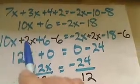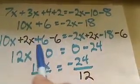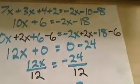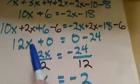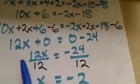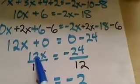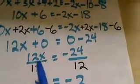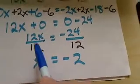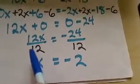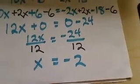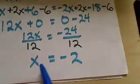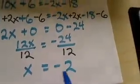Once we have added and subtracted everything we can, we've created zeros, which go away. Now we look for numerical coefficients that we can multiply or divide. Whenever we do that, we create ones. So 12 divided by 12 creates a 1 coefficient to x, or just x. And we find that x equals negative 2.